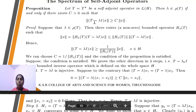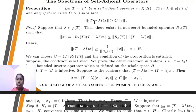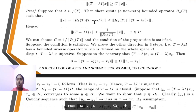Next topic: the spectrum of self-adjoint operators. First proposition statement: let T = T* be a self-adjoint operator in L(H). Then λ belongs to ρ(T) if and only if there exists c > 0 such that ‖(T − λI)h‖ ≥ c‖h‖. Proof: we use the resolvent set R_λ(T). The condition being satisfied implies T − λI is injective, that is one-to-one mapping.